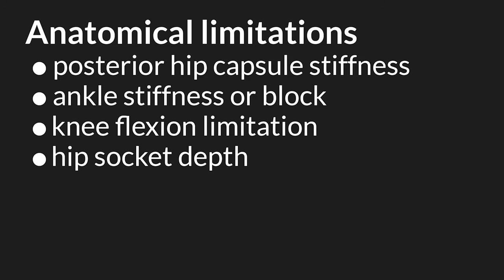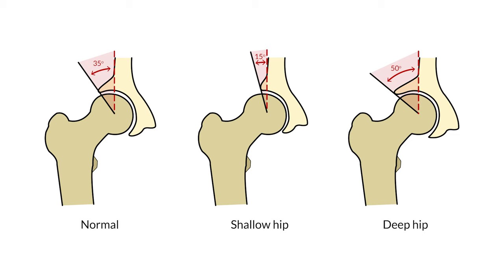Deep hip sockets can be measured with an x-ray. The hip is a ball and socket joint, meaning one half of the joint is spherical and the other half receives that sphere — the shoulder is another notable example. Having a deep hip socket means more of the ball shape is covered by the socket. Deep hip sockets are less mobile and require less muscular force to stay stable. People with deep hip sockets have trouble squatting low, but are better at high-force activities like powerlifting.